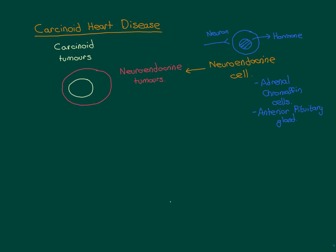So now we understand what a neuroendocrine tumour is — a tumour that arises from neuroendocrine cells, and all carcinoid tumours arise from neuroendocrine cells. What makes carcinoid tumours special within the set of neuroendocrine tumours? A carcinoid tumour is a neuroendocrine tumour that specifically arises from neuroendocrine cells that all have the same embryological origin — they all come from a certain cell type in the embryo.